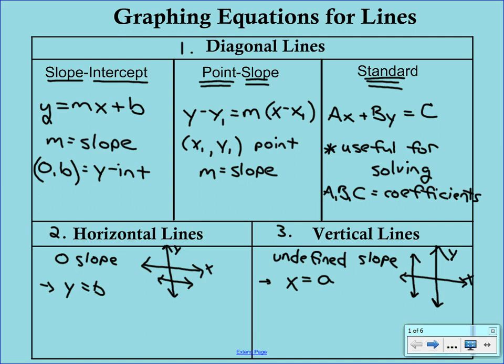Why don't you take a color here, and I want you just to box all of the different forms of the equation that we're going to be using today. Put a box around slope-intercept form, y equals mx plus b, and then put a box around y equals b and x equals a. These are the three types of equations that we need to be familiar with in order to graph the line.